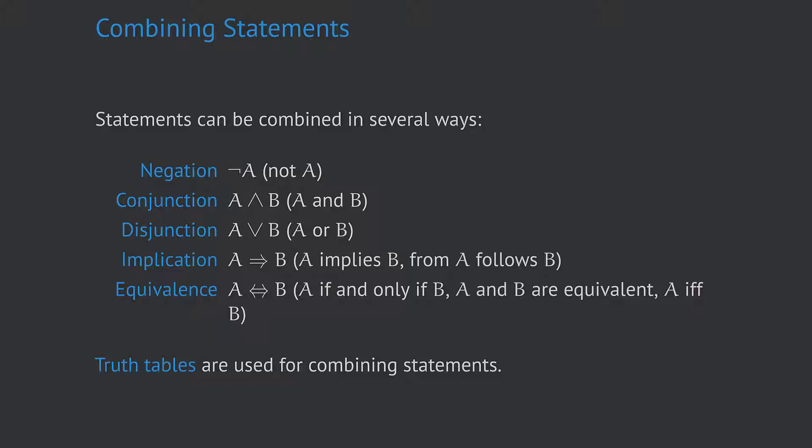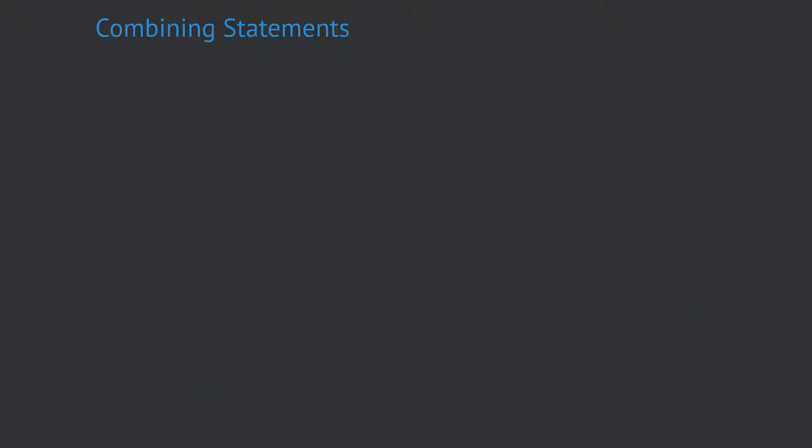So we can think of these different combining operators as functions with the values true or false, depending on the true or false values of the original statements. These functions and their values can be explicitly written down using so-called truth tables. Creating a truth table always starts with writing down all combinations of truth values of the original statements — in our case, we call them A and B.